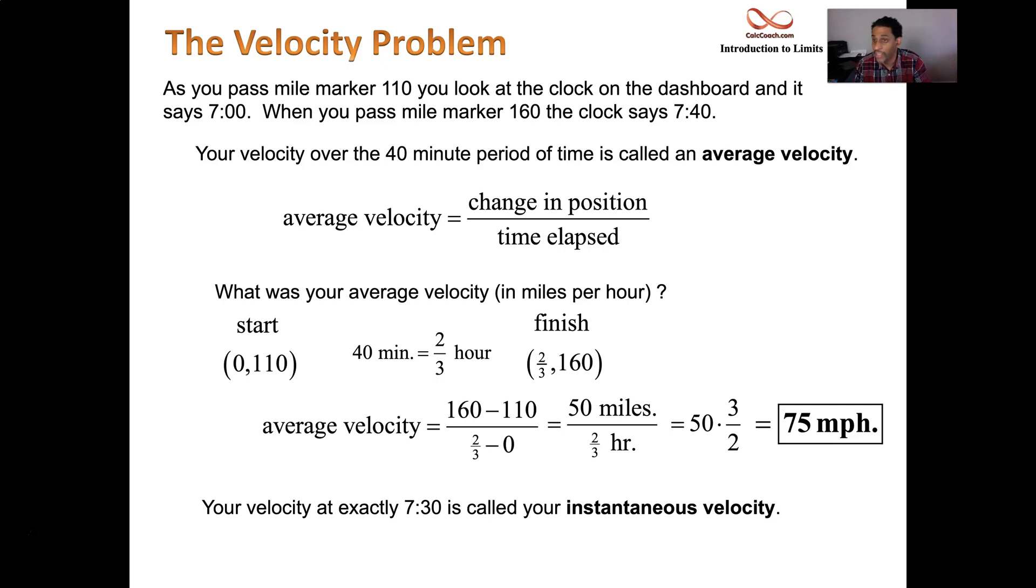We might be able to, we didn't look at the pedometer at that time. We don't know the exact speed, the exact velocity we're traveling at, at 7:30. That velocity isn't the average velocity. That velocity is called instantaneous velocity. At that instant, how fast were you going?